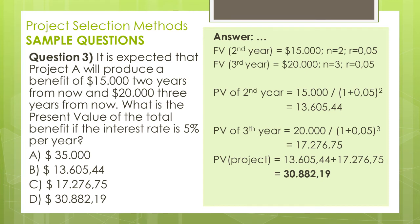If we put the values into the formula for PV of the second year, the result will be $13,605.44. If we make the same calculation for PV of the third year, the result will be $17,276.75. The last calculation is to add the two results, and we get $30,882.19. Therefore, the answer is D.